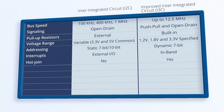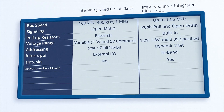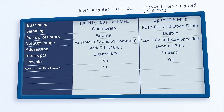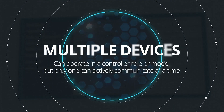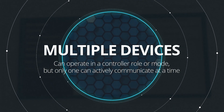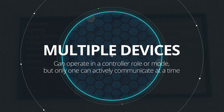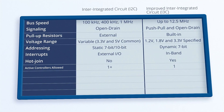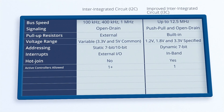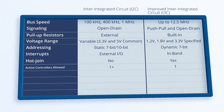Another major change in i3C is the number of active controllers allowed. i2C can support multi-controller buses where multiple devices can operate in a controller role, but only one can actively communicate at a time. i3C only allows one device to be in the controller role on a bus. However, secondary devices may request to become the active controller.